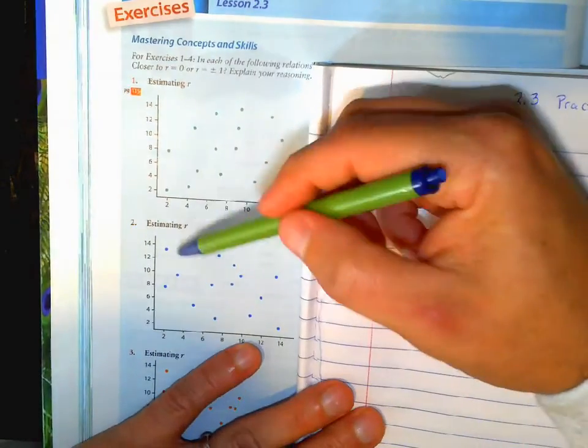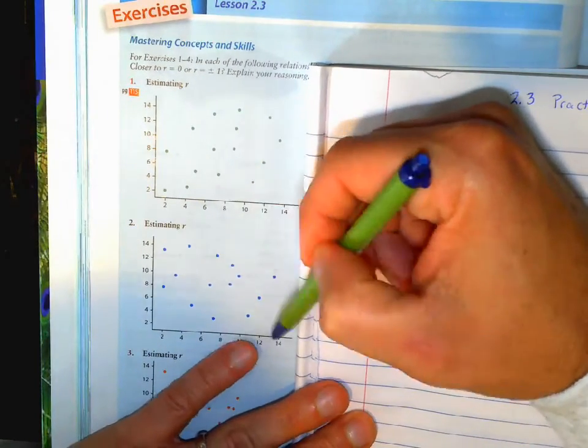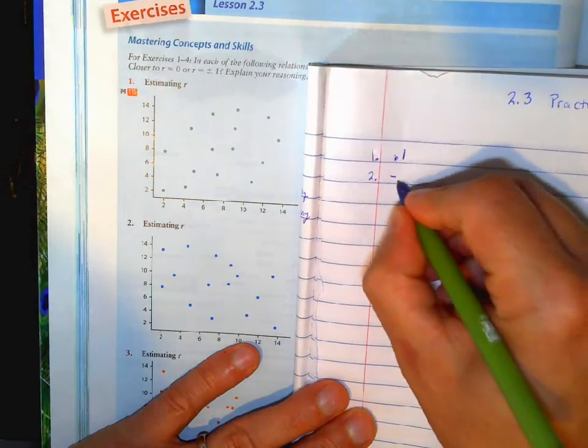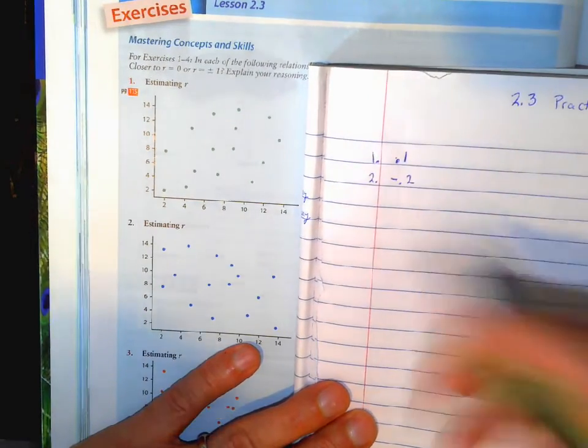Number 2 has a fairly negative, I mean it's kind of negative slope, but still very scattered, so not very strong. So we'll go negative 0.2 maybe, because it's a little bit stronger than that one.